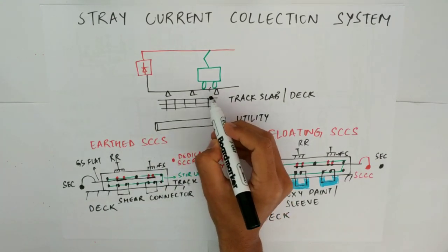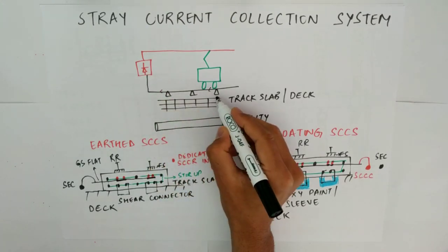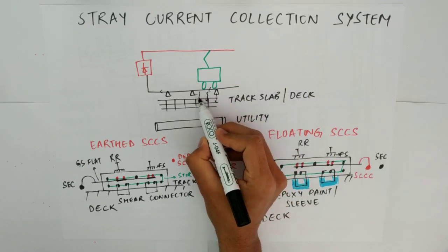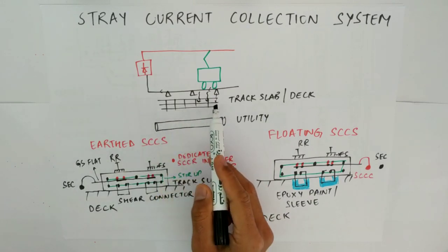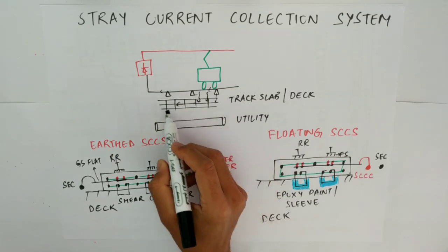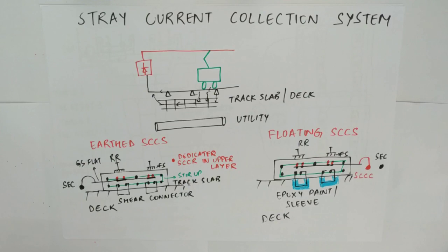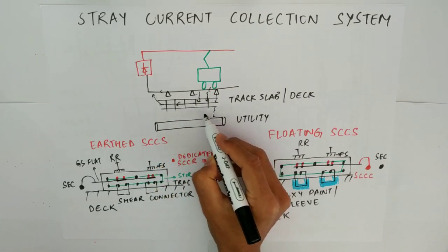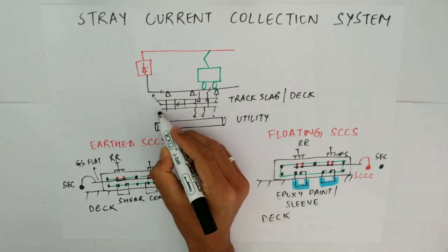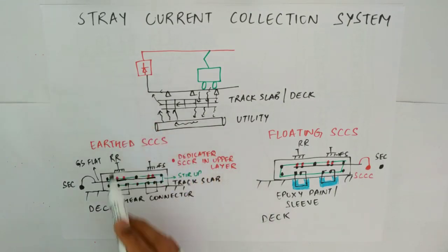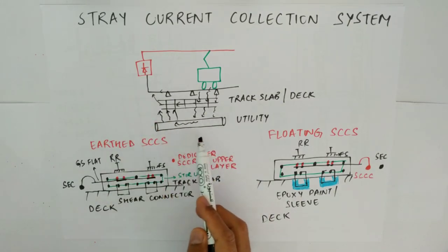When the return current is going back to its source, due to some imperfections in the insulation there is some leakage. The current will enter into the track slab or the reinforcements available below, and from here the current will start moving and then eventually enter back to the running rails and go back to the source. But even after this mesh there can be some leakage if there is a low resistance path available below, and from this path the current will try to travel and go back to its source — which can be your gas pipelines, water pipelines, or other utilities.